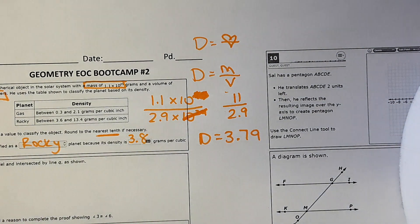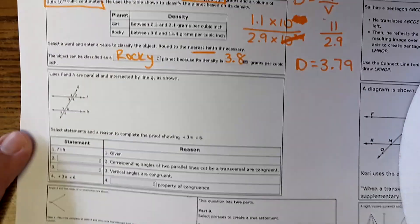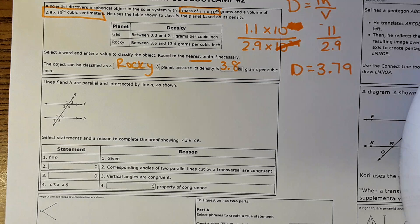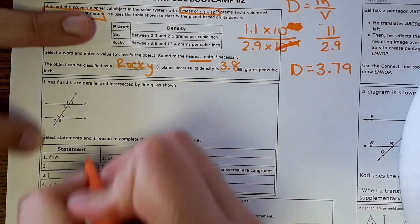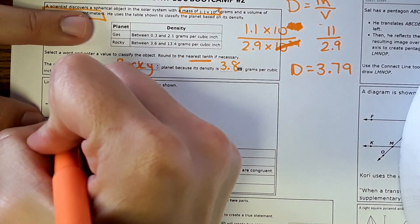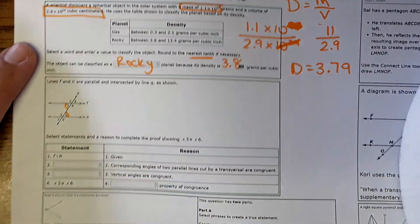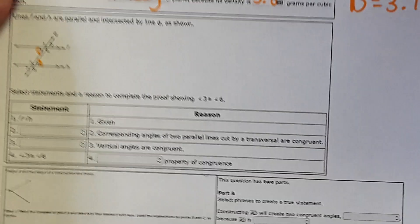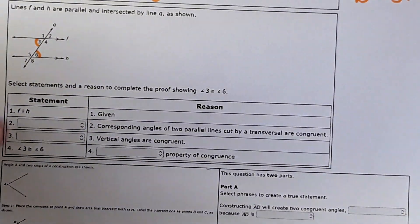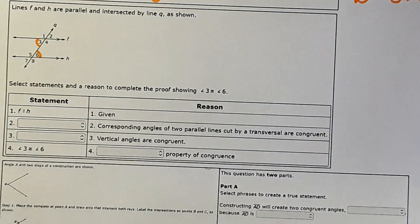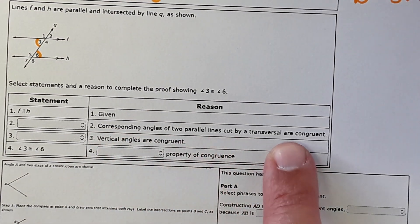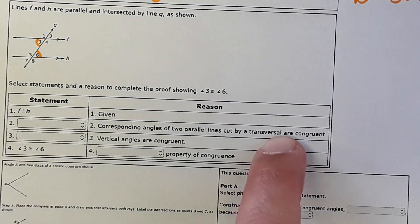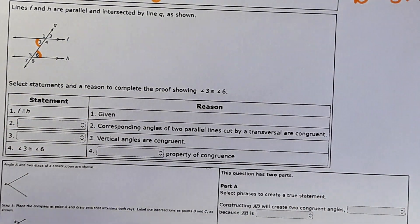Okay, next one. Now we have a proof, it is a pretty simple proof though. We have parallel lines and a transversal, so select the statements and reasons to complete the proof showing that angle 3 is congruent to angle 6. By the way, you'll never have to type anything in, it'll just be a drop down, at least for the proofs. Corresponding angles of two parallel lines cut by a transversal are congruent.